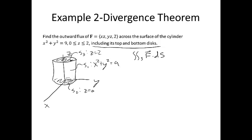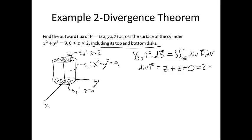If you were to calculate the surface integral directly, you would have to calculate the surface integral over each of the three pieces and add them together. But since S is a closed surface, we can use the divergence theorem and instead do the triple integral of the divergence of the vector field over the region E. The divergence of the vector field is the partial derivative of the first component with respect to x — that's z — plus the partial with respect to y — that's z — plus the partial with respect to z. Altogether we have 2z. So our surface integral is the triple integral over E of 2z dV.